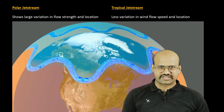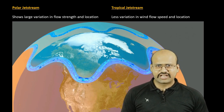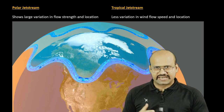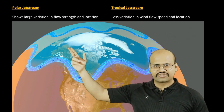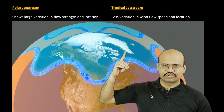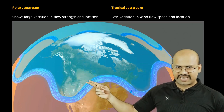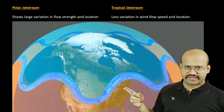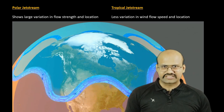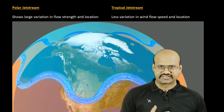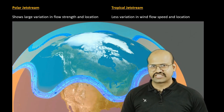The polar jet stream shows large variation in flow strength and location. The polar stream can be confined very close to the north pole, and it can also extend to a greater distance southward till North America. So there is large variation in polar jet streams, but the tropical jet streams show very little variation and do not migrate as much as the polar jet stream.